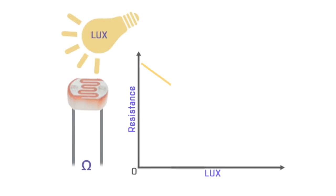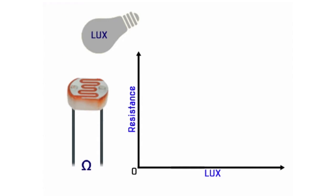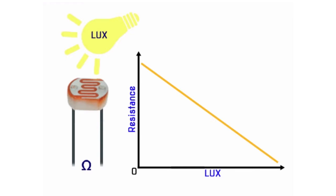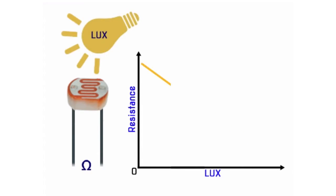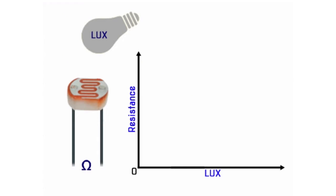LDRs are used most often to detect the presence of light or for measuring the intensity of light. Typically an LDR will have from 1 megaohm to 2 megaohms at total darkness, from 10 to 20 kilohms at 10 lux, and from 2 to 5 kilohms at 100 lux. The resistance between the two contacts of the sensor decreases with light intensity, or the conductance between two contacts increases.